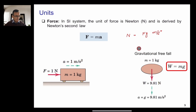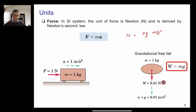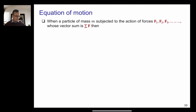For gravitational free fall, if you consider a body of mass one kilogram, we know that W equals mg. Because g is 9.81 m/s², the weight W becomes 9.81 Newtons.